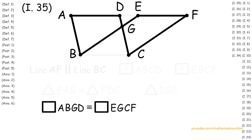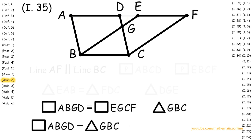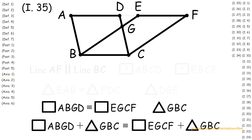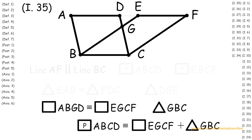Now with triangle GBC, we apply Axiom 2 to attain that quadrilateral ABGD plus triangle GBC is congruent to quadrilateral EGCF plus triangle GBC. And what this turns out to be is that parallelogram ABCD is congruent to parallelogram EBCF.